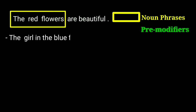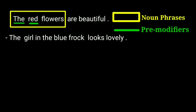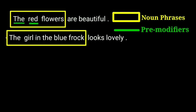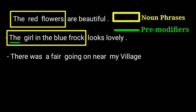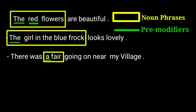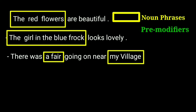The girl in the blue frog looks lovely. Can you identify the noun phrase from this sentence? 'The girl in the blue frog' is the noun phrase, with 'girl' as the head noun. 'The' is the pre-modifier — an article in the determiner section. There was a fire going on near my village. 'A fire' is a noun phrase with 'a' as pre-modifier (article). 'My village' is another noun phrase with 'my' as a possessive determiner and 'village' as the head noun.